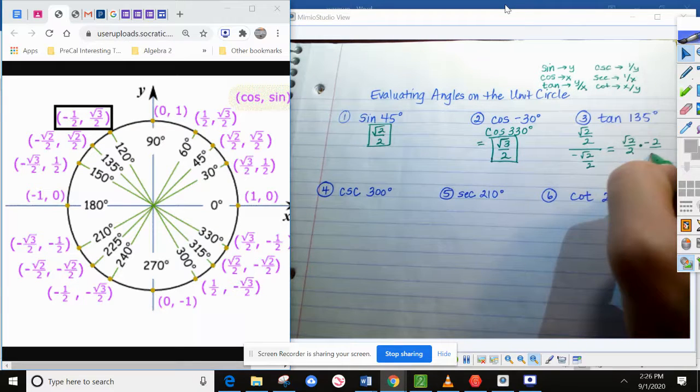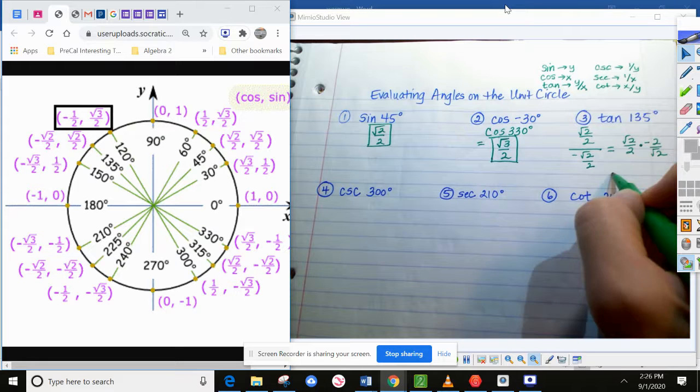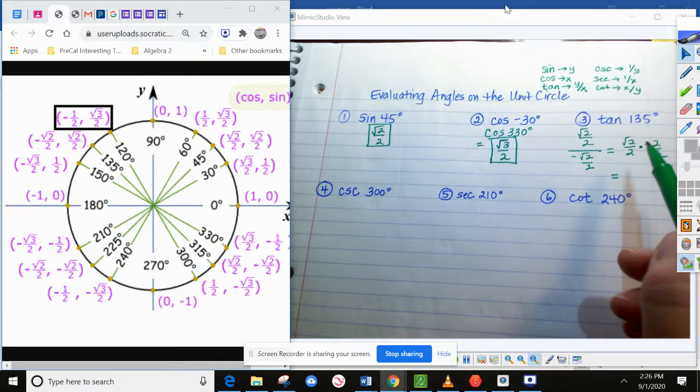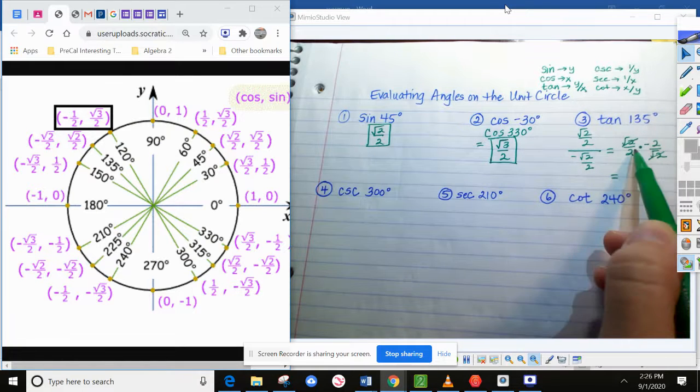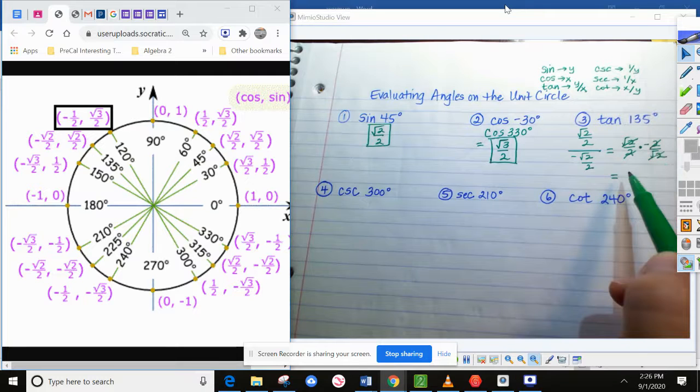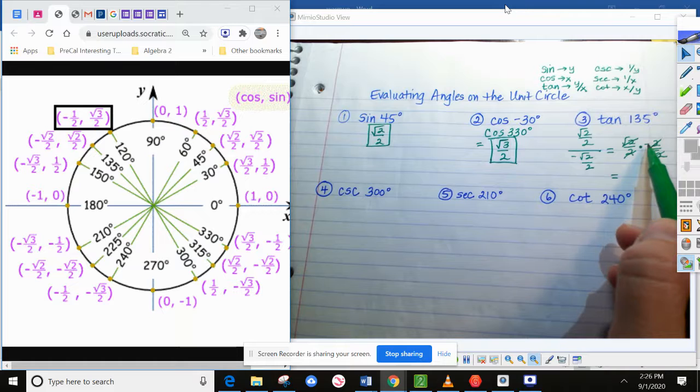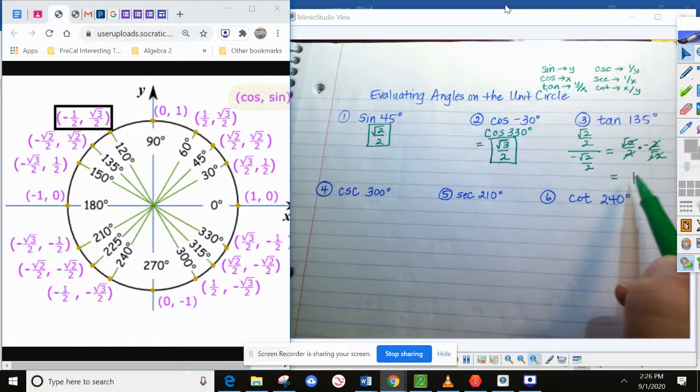Now there's some interesting things that happen here, and this is something you remember from algebra 2 probably, when you were multiplying rational expressions. These can be canceled, and so can these, because they were dividing out really to make a 1. But remember, there's still a negative here, and if everything cancels, the answer is 1. But since one of those fractions was a negative, the entire answer is a negative 1.